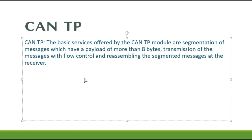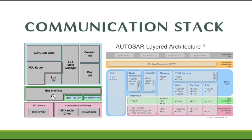I have created a dedicated video about CAN TP — click the link above for more details. Basically, CAN TP gets its input from CAN IF. If the data is 8 bytes or less, the PDU router gets input directly from CAN IF. If the data is more than 8 bytes, we need CAN TP — it has a mechanism to send more than 8 bytes to the PDU router. Simply put, CAN TP handles segmentation and reassembly.